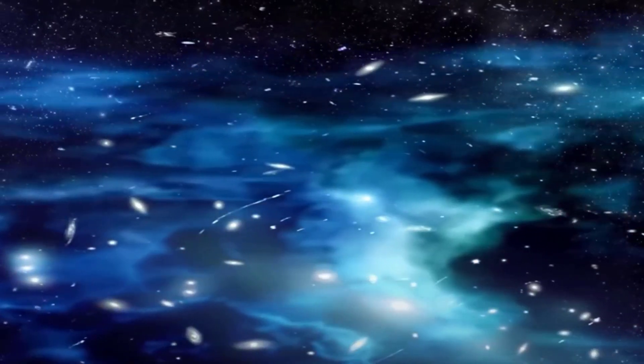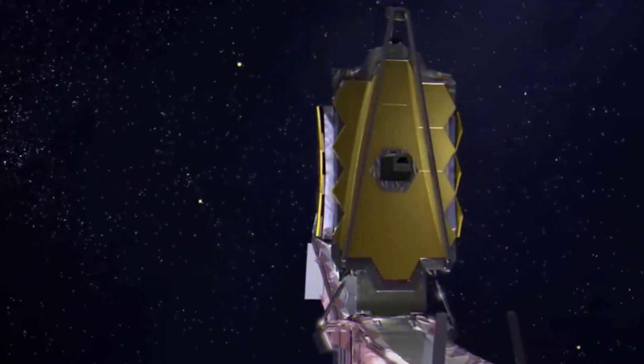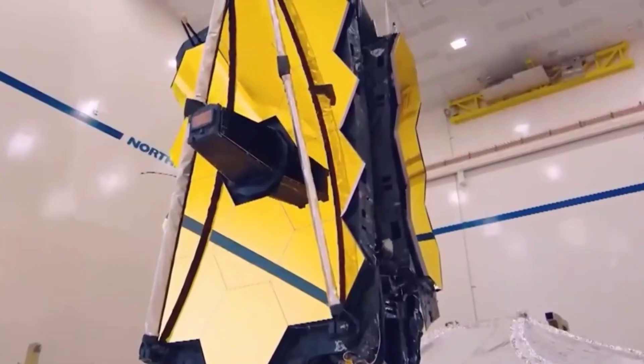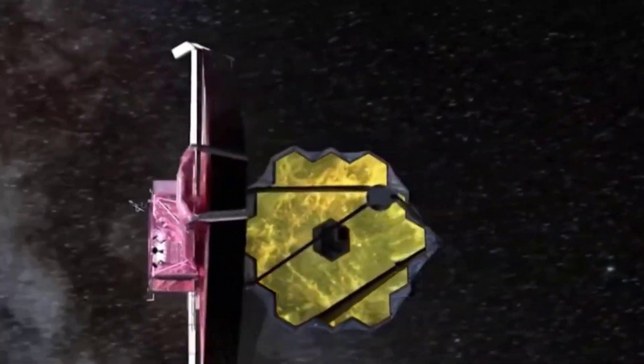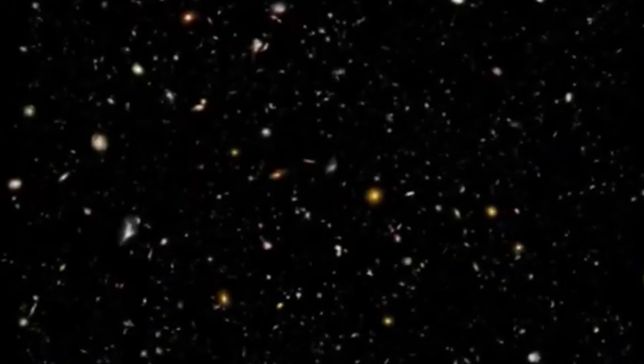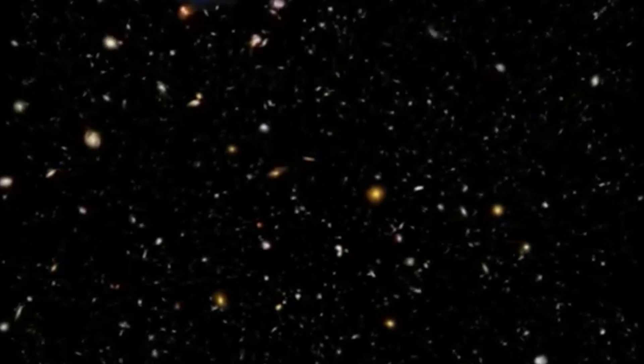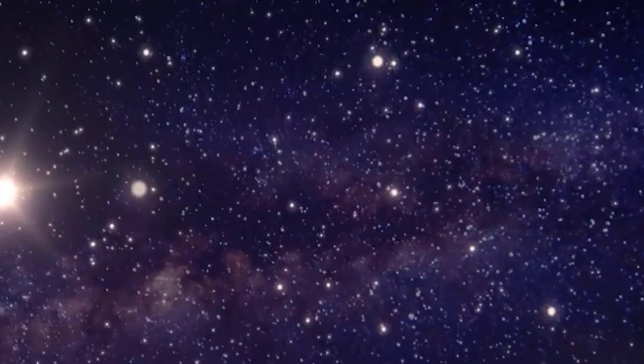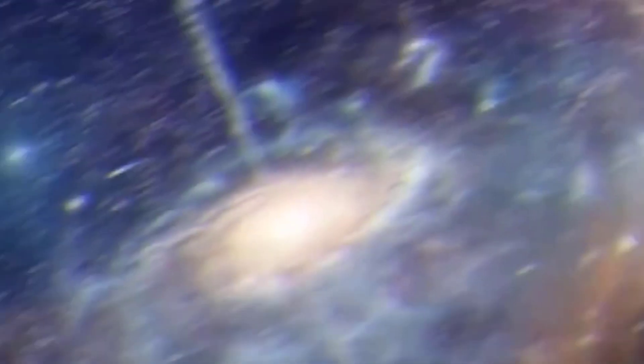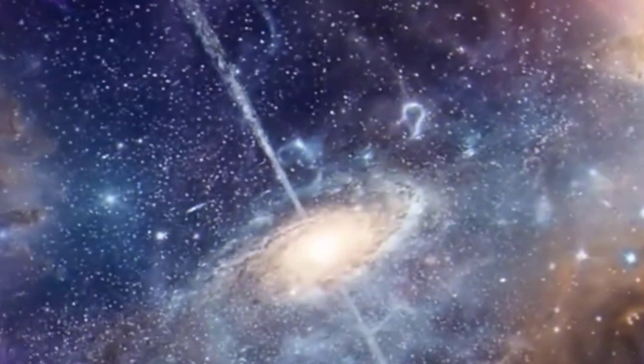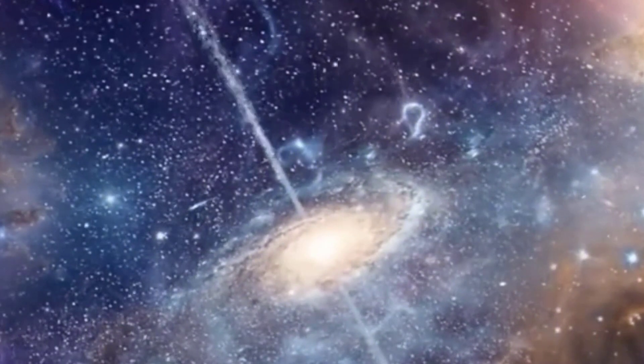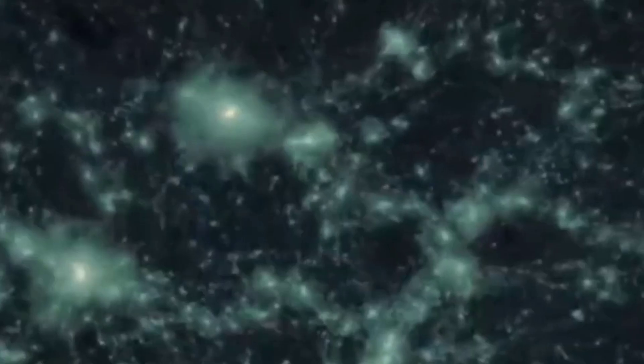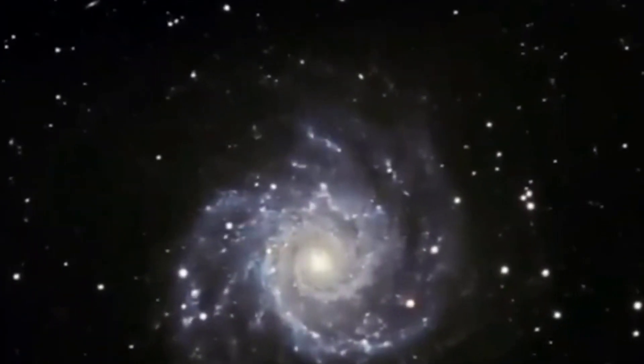Because light is stretched or redshifted as it moves through the expanding universe, redness is used as a proxy for age in astronomy. These galaxies appear to have existed for 13.5 billion years, making them 500 to 700 million years after the Big Bang. According to calculations, the most recent galaxies were comparable in mass to the Milky Way and included tens to hundreds of billions of sun-sized stars.